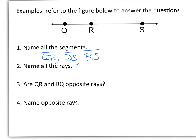Number 2, name all the rays. So with rays, order does matter. So if I wanted to start with point Q and go to the right, I could have ray QR. I could have ray QS. I could also start with endpoint R. I could have ray RS. Or I could go to the left and have ray RQ.